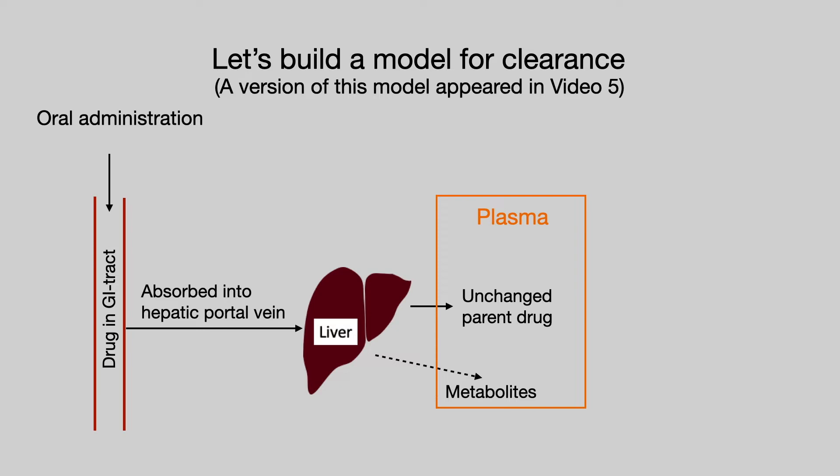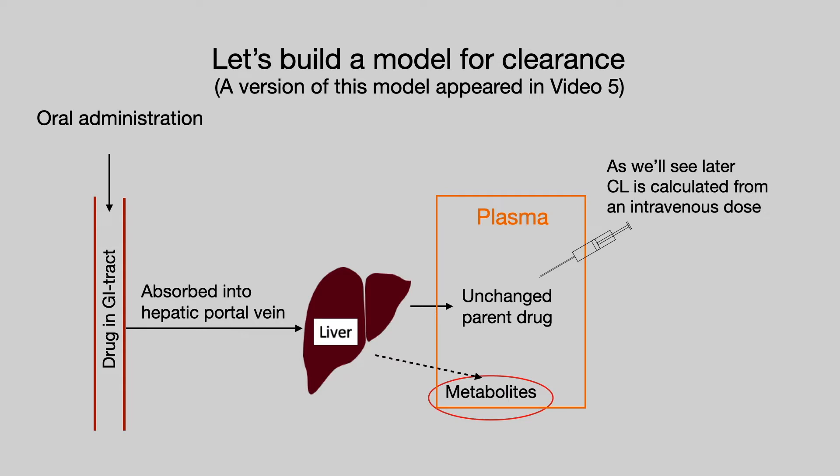The other possibility is that the liver will metabolise the drug into a series of metabolites. There is another route of the drug into plasma — it can be directly injected. I mention this now because, as we'll see later, clearance is calculated from an intravenous dose. But back to the main theme of this model, we are going to have to look at metabolites and what we mean by that.